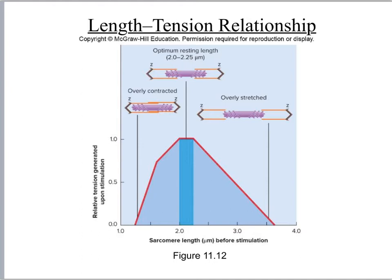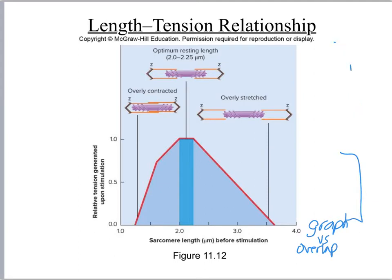This picture shows a graph alongside an actual illustration of the sarcomere. We're going to be comparing the two of them. The x-axis shows sarcomere length in micrometers, and the y-axis shows the resting tension after stimulation — that is, how much force is going to be generated.